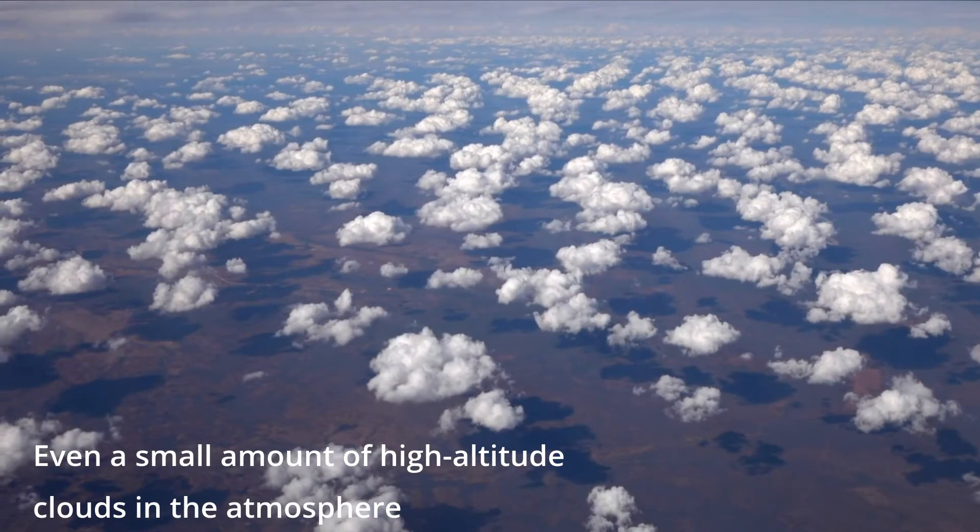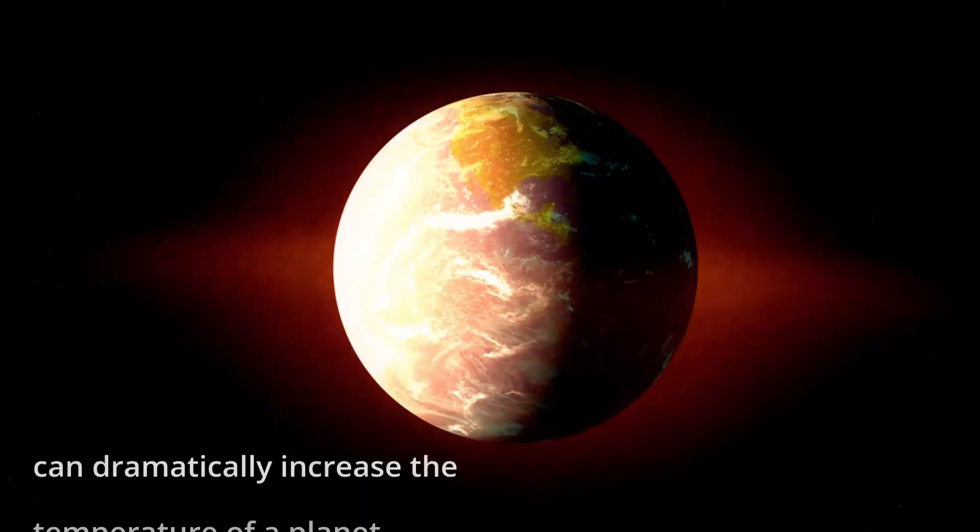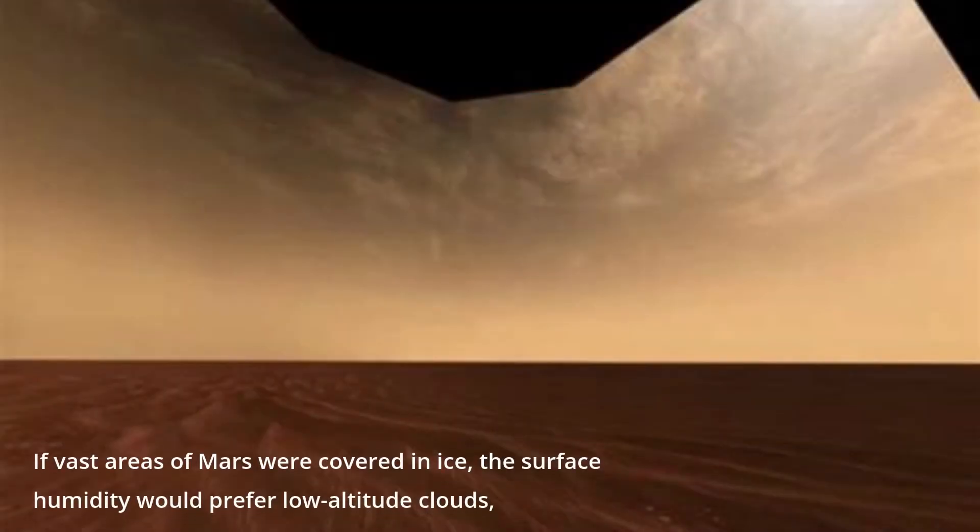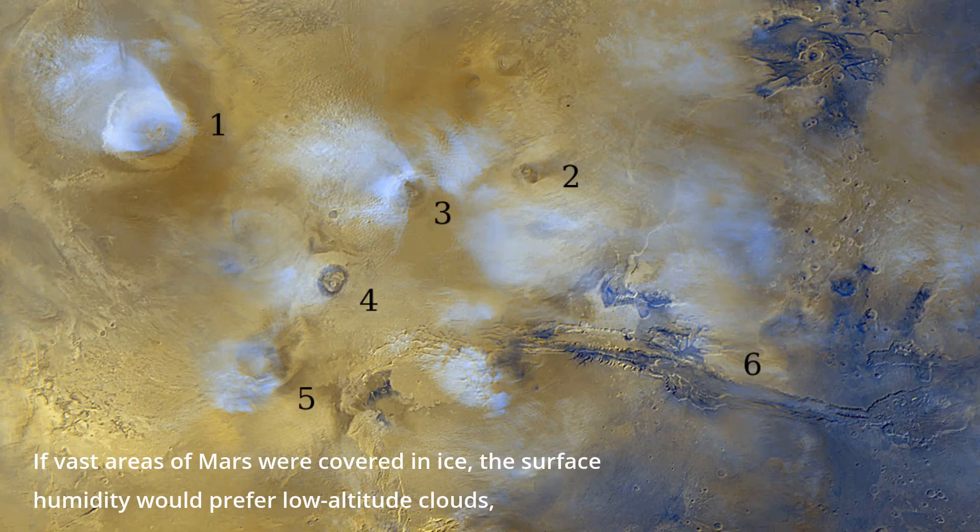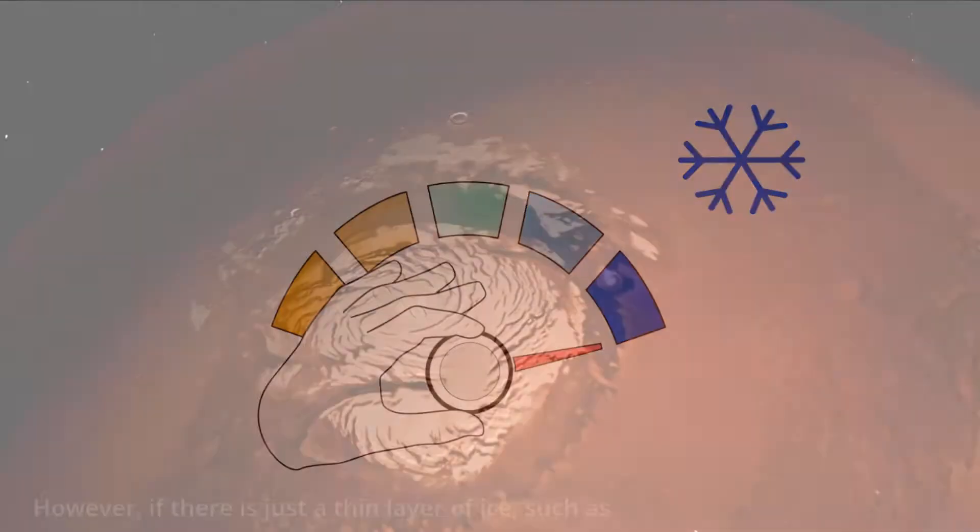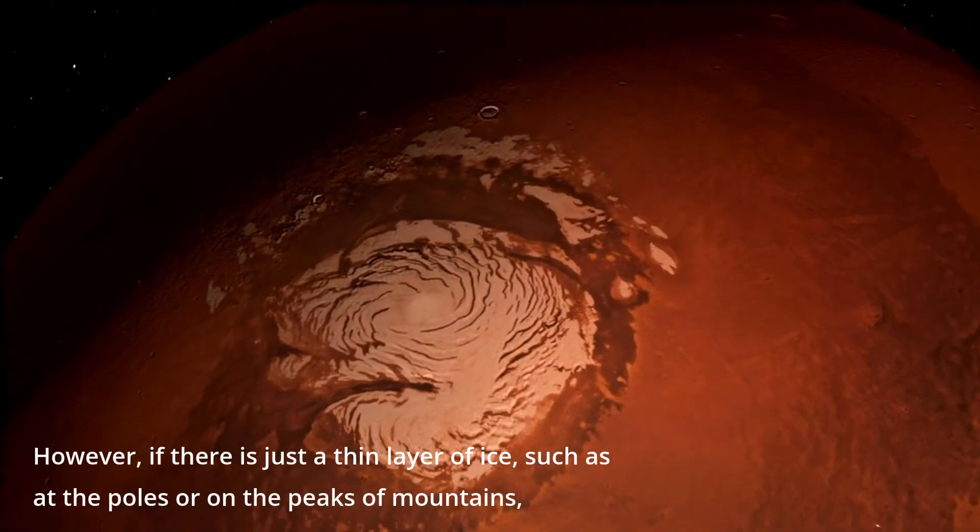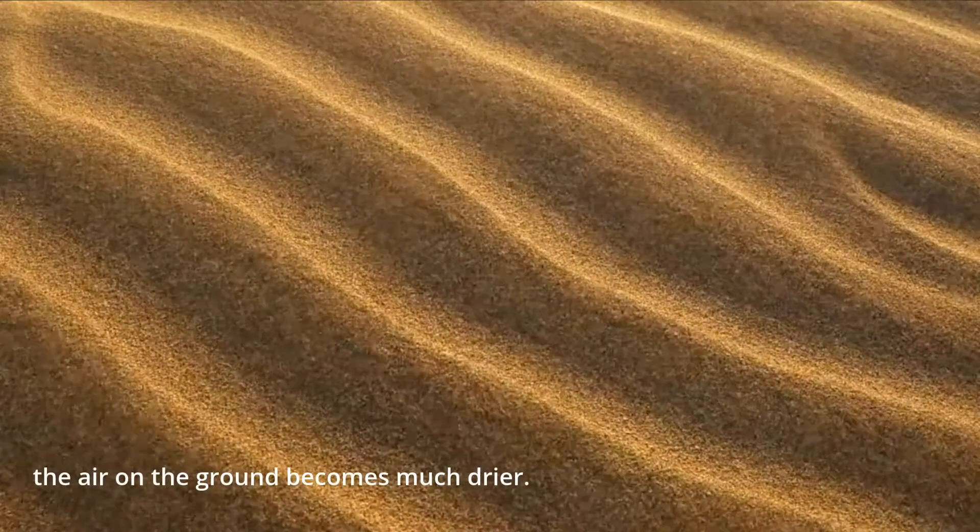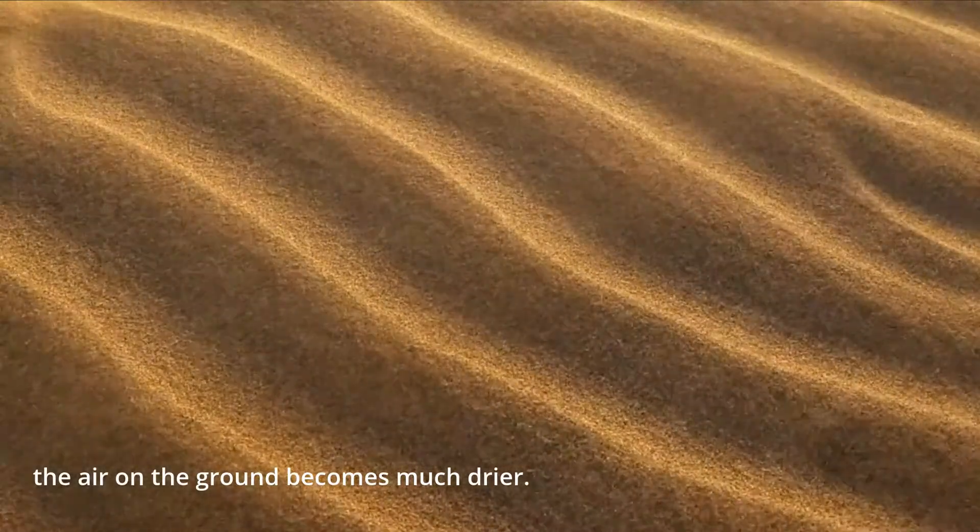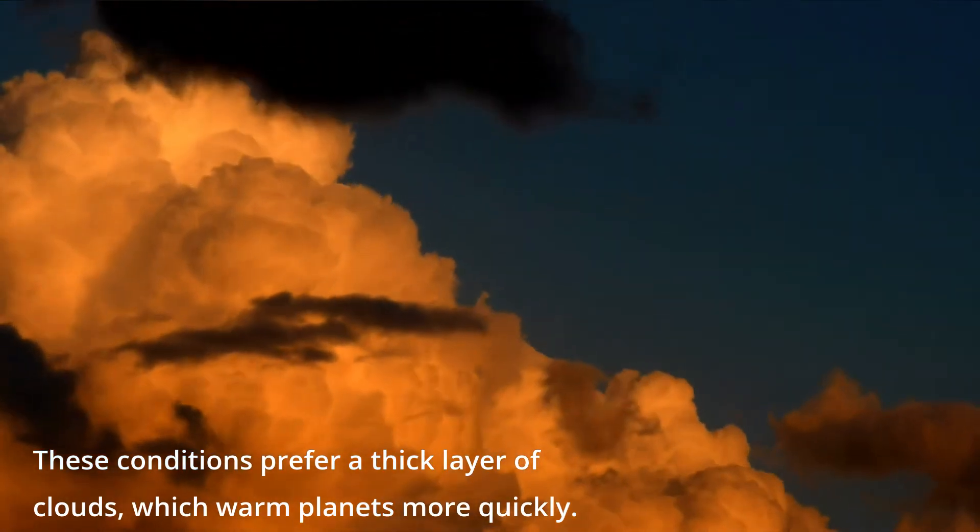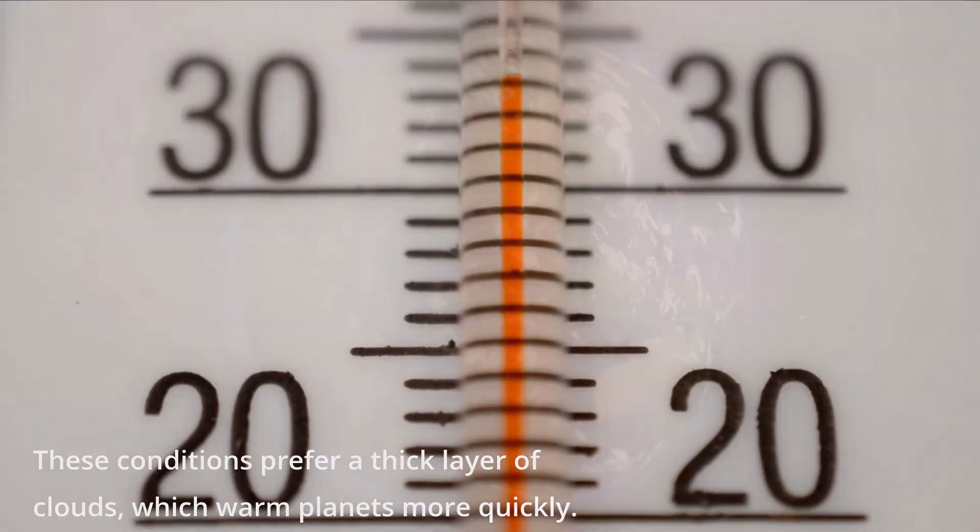Even a small amount of high-altitude clouds in the atmosphere can dramatically increase the temperature of a planet. If vast areas of Mars were covered in ice, the surface humidity would prefer low-altitude clouds, which aren't thought to warm planets very much. However, if there is just a thin layer of ice, such as at the poles or on the peaks of mountains, the air on the ground becomes much drier. These conditions prefer a thick layer of clouds, which warm planets more quickly.